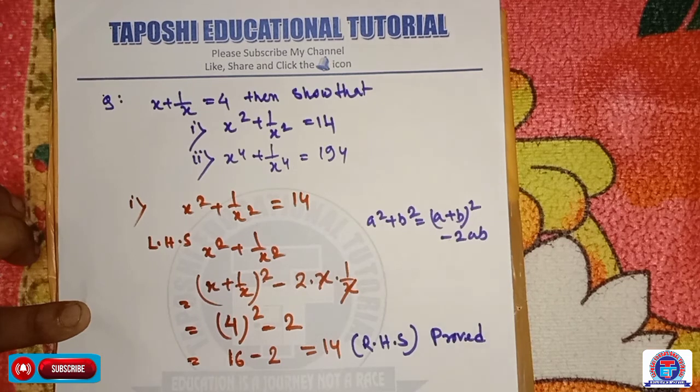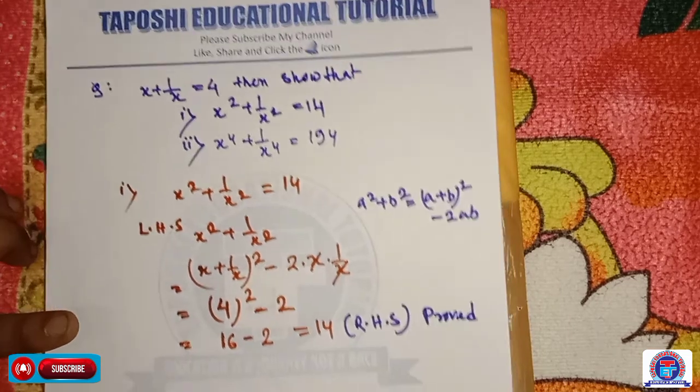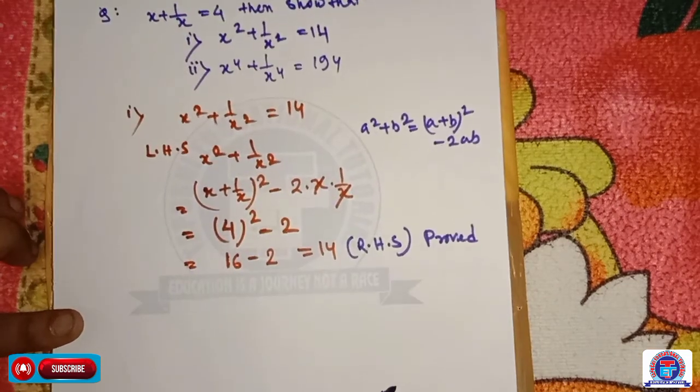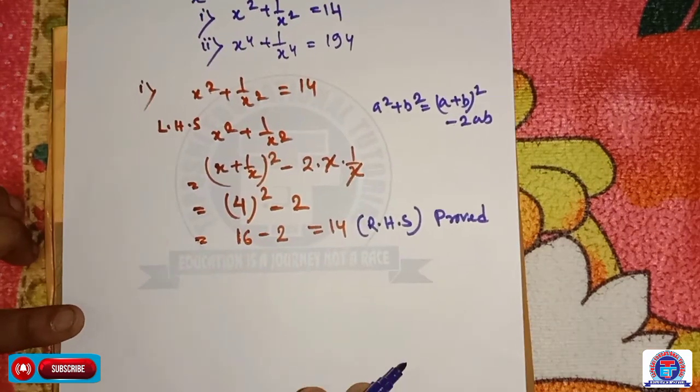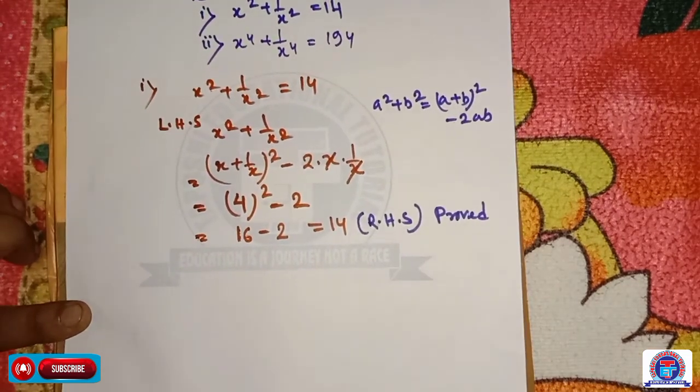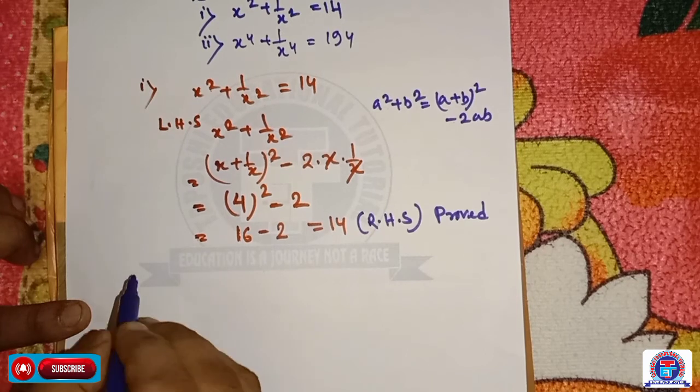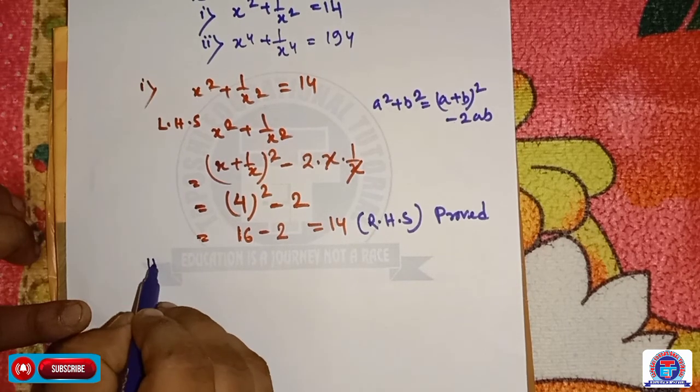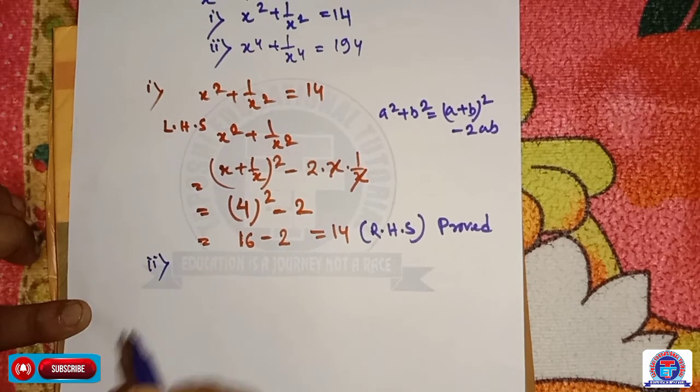Now another problem is given here. That is problem number 2: x to the power 4 plus 1 by x to the power 4 is equal to 194.